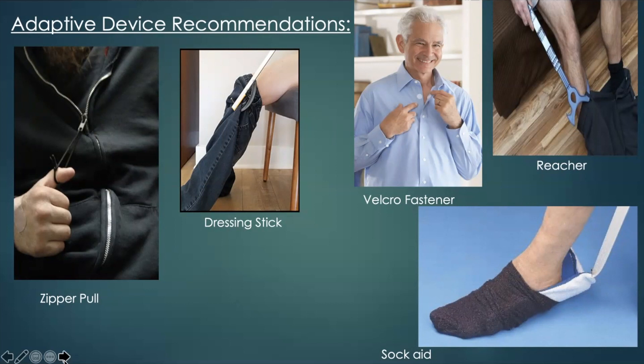One way upper body dressing can be achieved is by sitting with the affected arm supported on a table at 90 degrees. The client should slide the sleeve of the shirt on the affected arm first, using the non-affected upper extremity only. Once the affected arm is in the sleeve, the client can then grab the shirt with the unaffected extremity and place the arm into the sleeve. The hand of the operated shoulder can be used to stabilize and assist in buttoning, but the client must be cognizant of not flexing at the shoulder throughout the activity.